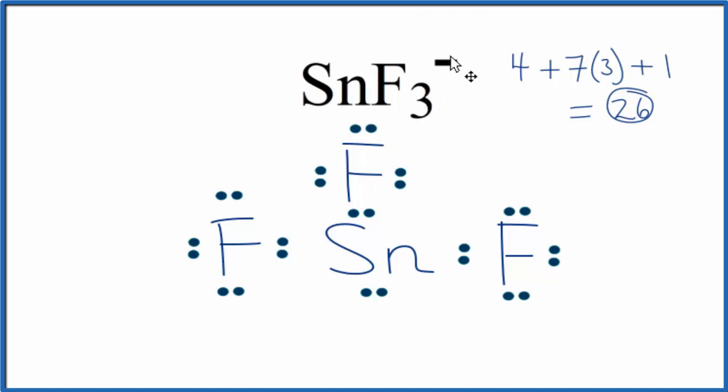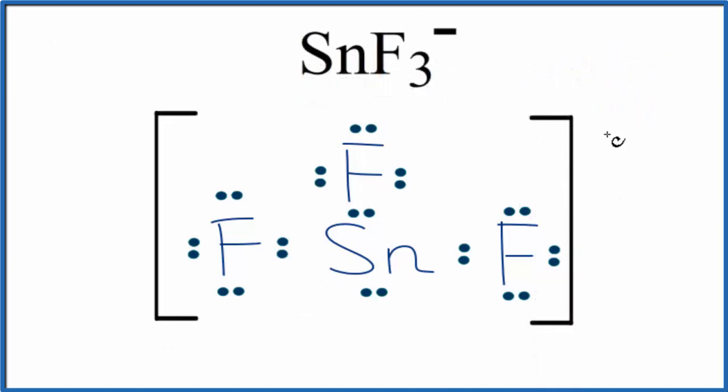Because it's an ion, we should put brackets around it. And then put a negative sign outside here.